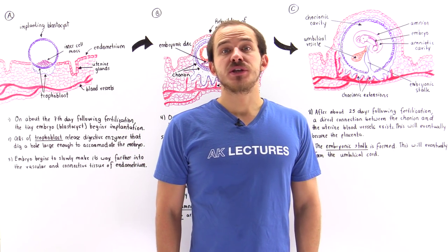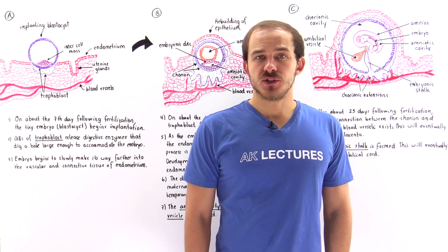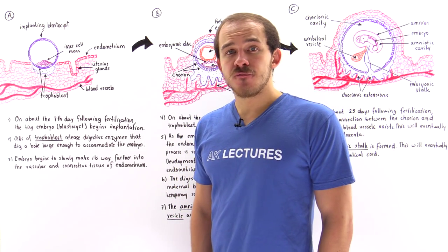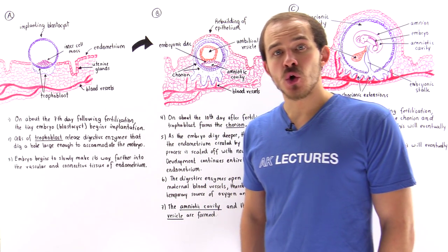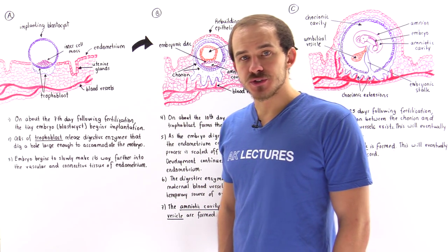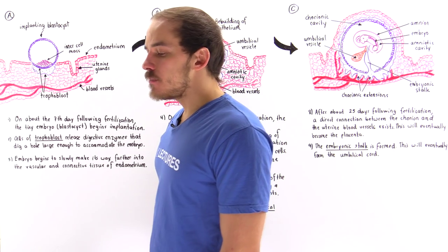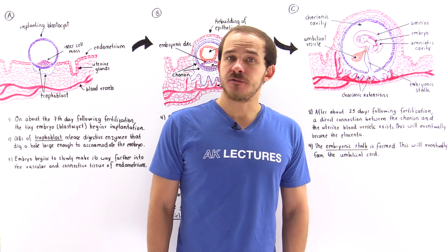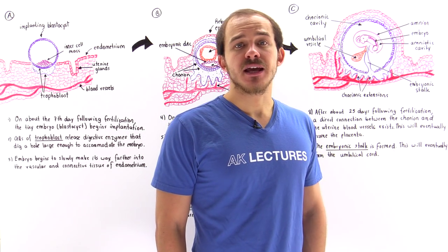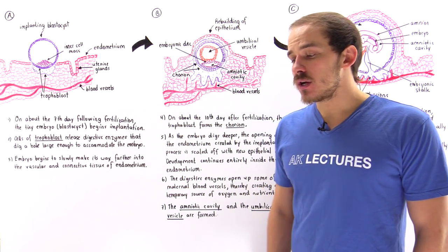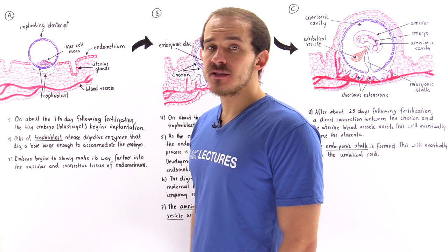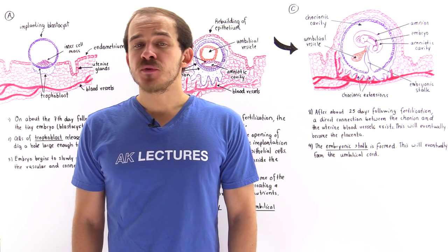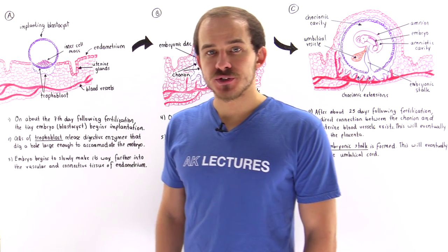Following fertilization, which takes place inside the fallopian tube of the female reproductive system, the zygote that is formed begins to move along the fallopian tube and towards the cavity of the uterus. As it moves along, it begins to divide in a process known as cleavage and eventually forms a structure known as a morula. A morula consists of individual tiny identical cells known as blastomeres, and eventually that morula will make its way to the cavity of the uterus.